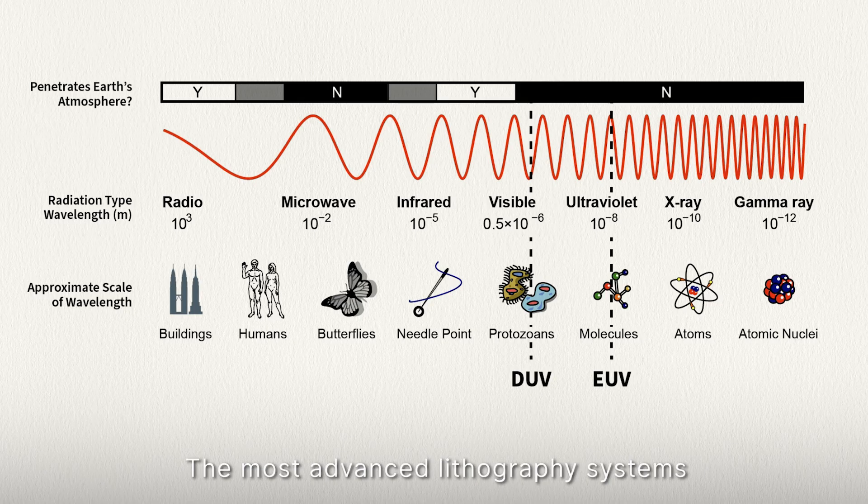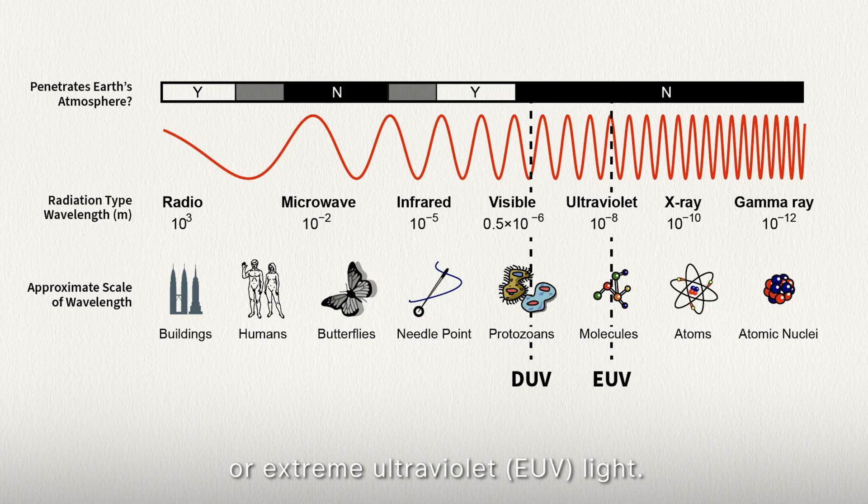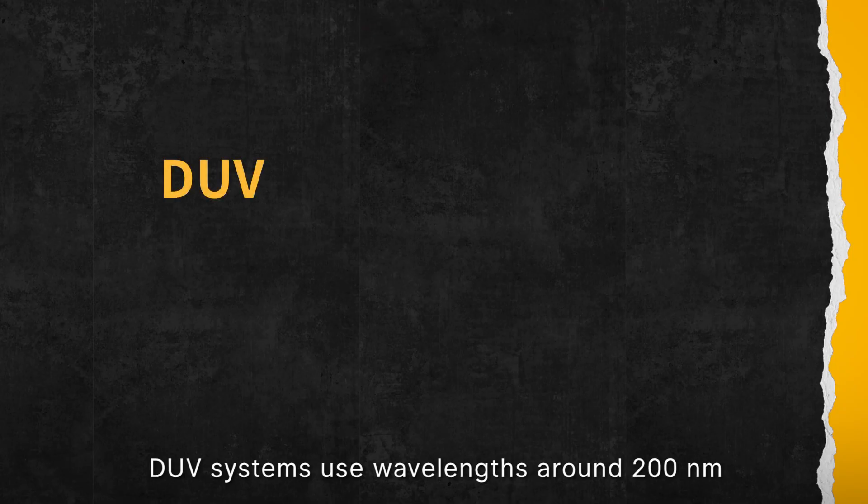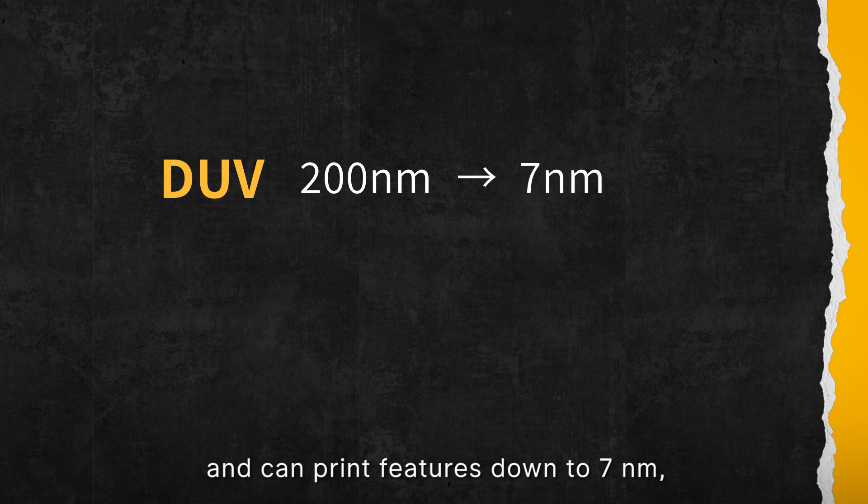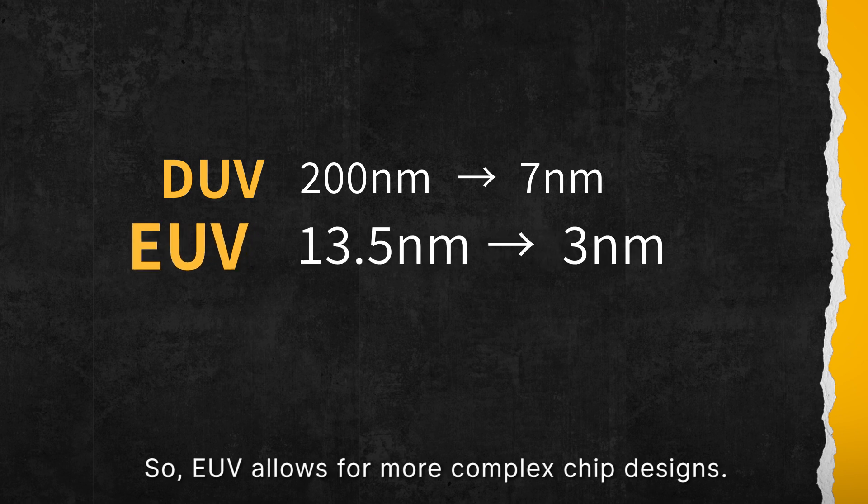The most advanced lithography systems use deep ultraviolet DUV or extreme ultraviolet EUV light. DUV systems use wavelengths around 193 nanometers that can print features down to 7 nanometers, while EUV systems use 13.5 nanometer light and can print features down to 3 nanometers. So EUV allows for more complex chip designs.